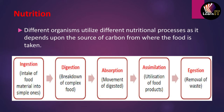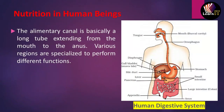The fourth step is assimilation. All the food that has been ingested, digested, and absorbed is utilized by different organs and cells — this utilization is called assimilation. The fifth and last step is ejection, in which all the removal of waste material takes place.